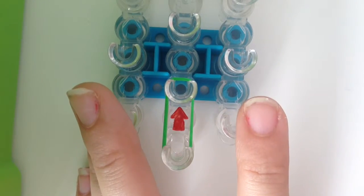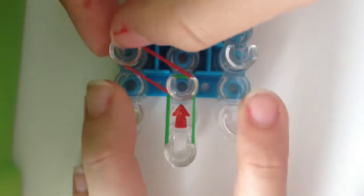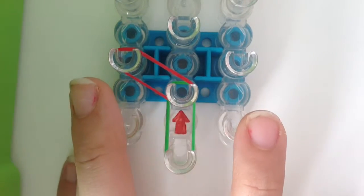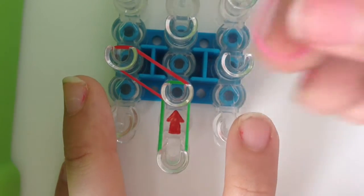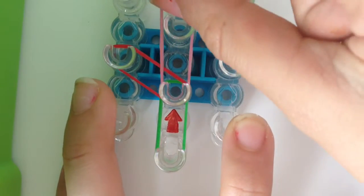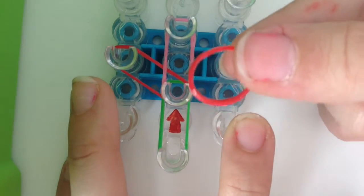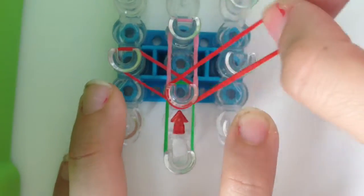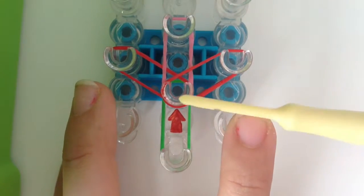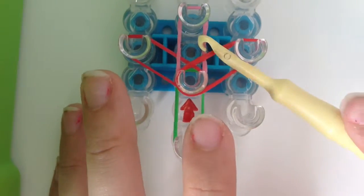Second you get your red and place it from the end of that green over to the left diagonally. Then you get your pink band and place it from the middle peg going upwards. You get your red band and place it from the middle to the second peg on the right.